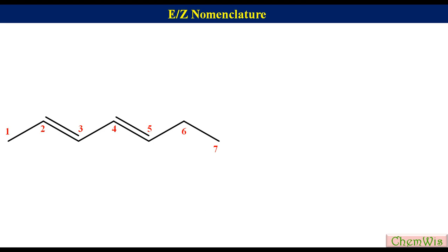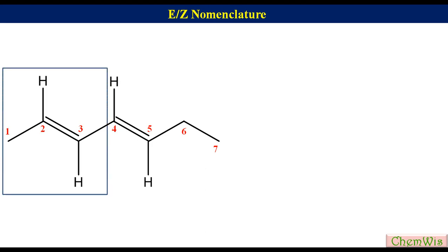Now we will put hidden hydrogens on C2, C3, C4 and C5 for clarity. Let's focus on finding the configuration of the C2-C3 double bond. On C2, priority of methyl is 1 and that of H is 2. On C3, priority of the alkenyl residue is 1 and that of H is 2. Since the higher priority groups on C2 and C3 are on opposite sides, the configuration will be E.